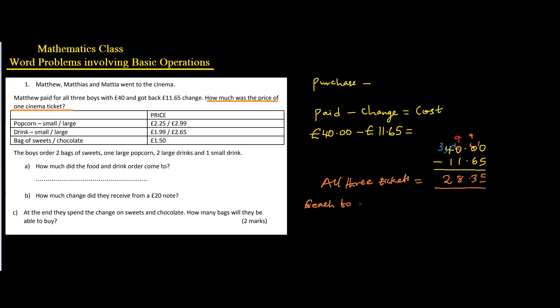Each ticket cost a certain amount, so each ticket cost, let's say, x or a or any alphabet. Okay, so I can say each ticket cost C amount of money. Then the first ticket plus the second ticket plus the third ticket, it's going to be 3C. Then the total cost according to our calculation here is 28.35 pounds.